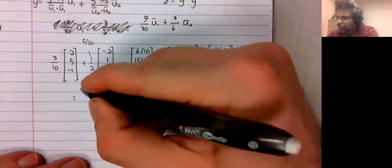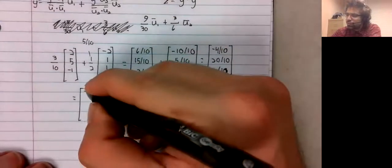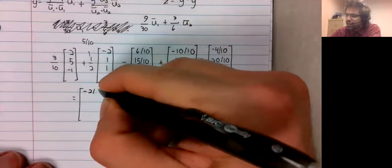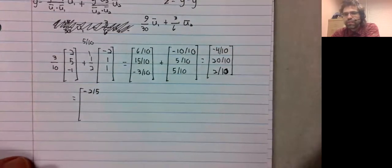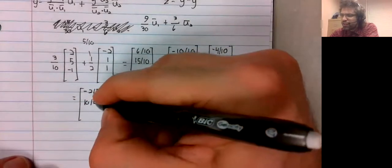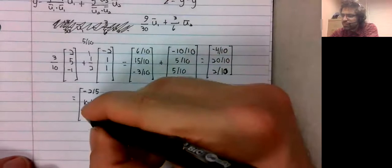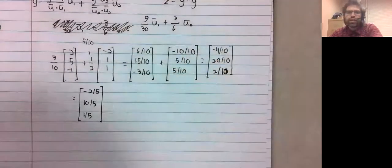Which could then be simplified a little. So negative 2 fifths, 10 fifths, 1 fifth.